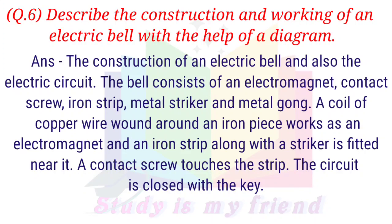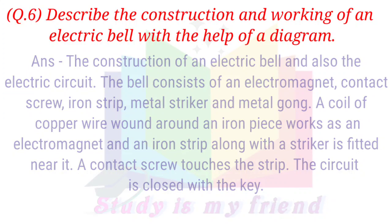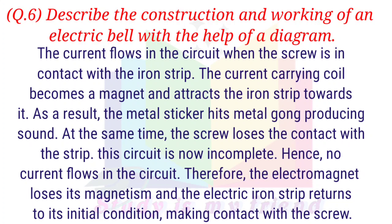The bell consists of an electromagnet, contact screw, iron strip, metal striker, and metal gong. A coil of copper wire wound around an iron piece works as an electromagnet, and an iron strip along with a striker is fitted near it. A contact screw touches the strip. The circuit is closed with the key. The current flows in the circuit when the screw is in contact with the iron strip. The current-carrying coil becomes a magnet and attracts the iron strip toward it. As a result, the metal striker hits the metal gong producing sound.